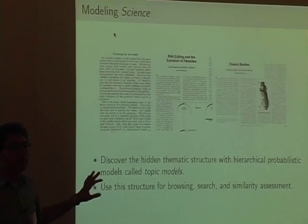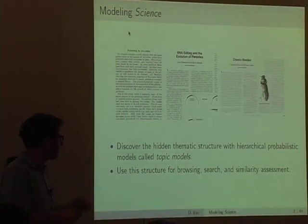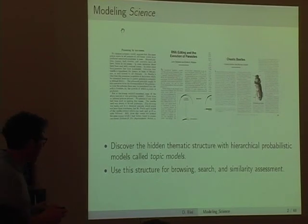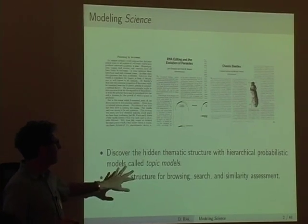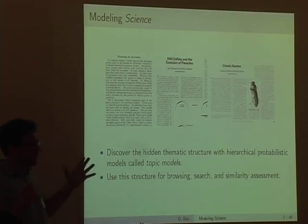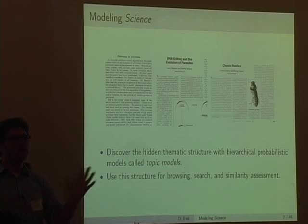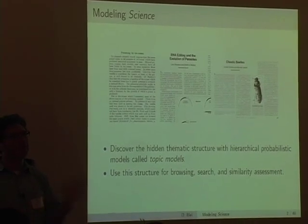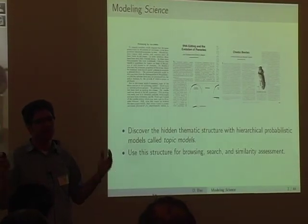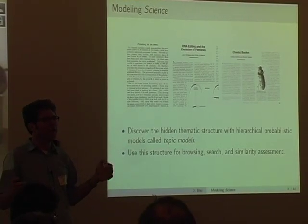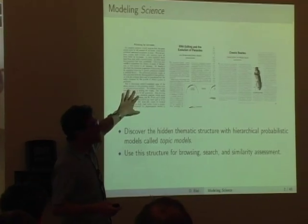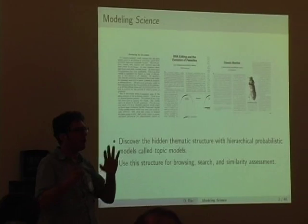Topic models are hierarchical probabilistic models of text that use multinomial distributions over words to capture hidden themes. We want to figure out ways to use this structure for things like browsing, search, and similarity assessment between articles. JSTOR takes these volumes, scans them, and they just have a big bag of documents. There's no structure, no metadata, no keywords — nobody has typed in where things belong in a hierarchy.